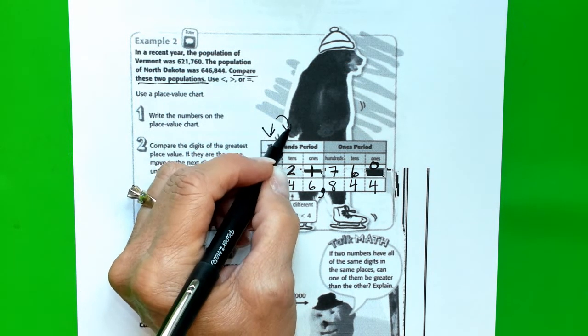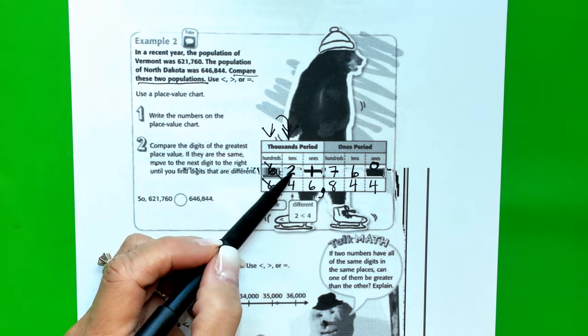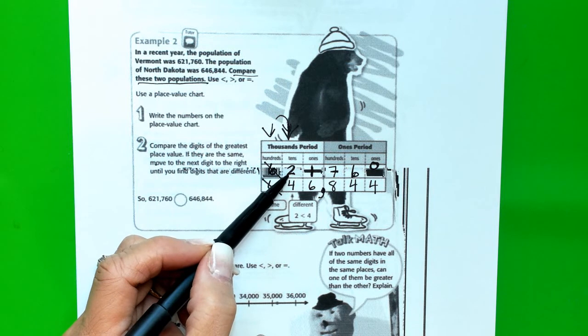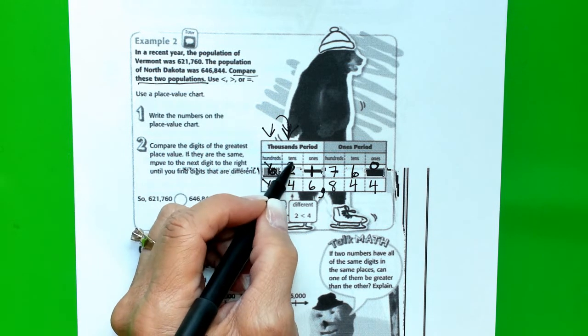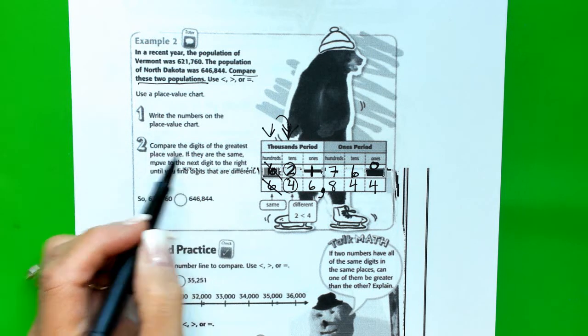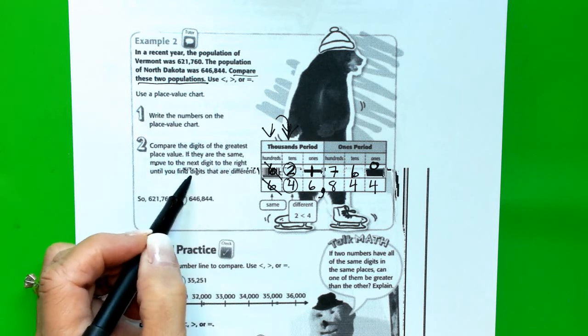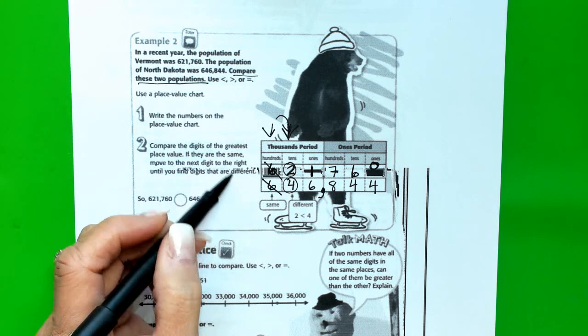So, let's move to the 10,000th place. And here, we can see a 2 and a 4. So, it says we're going to move to the next digit to the right until you find digits that are different.